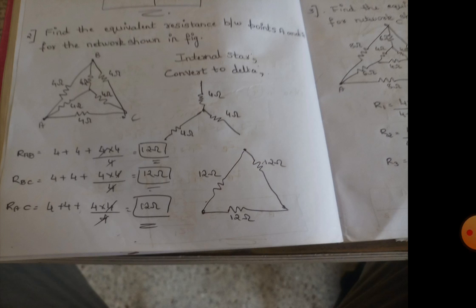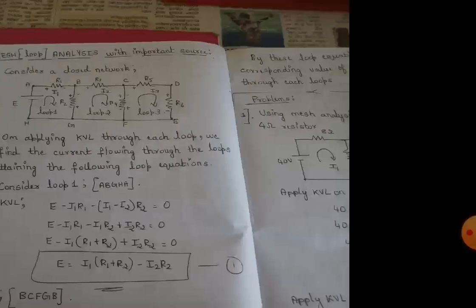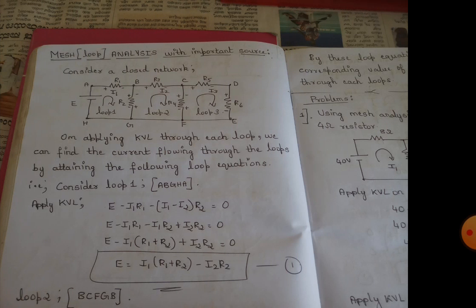Similarly, there is the conversion of a star to delta network. We also have another concept called mesh analysis or loop analysis, where the circuit consists of n number of closed loops. For each loop, we need to take one closed loop and calculate the currents using KVL — applying KVL through each loop.